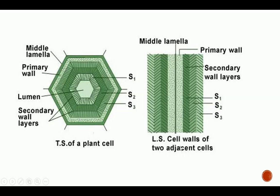In a transverse section, you can see a primary wall and the primary wall of another cell with the middle lamella joining those two primary walls. In the longitudinal section, this structure is similarly visible. That is how the primary cell wall is structured for a plant cell.